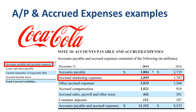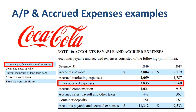The next line item is accrued marketing expenses. Sounds logical for a company that is very brand-driven to have a balance there. Accrued marketing expenses represent the balance sheet liability for marketing costs that have been incurred, but for which an invoice has not or not yet been received. Next is other accrued expenses — other in the sense of not listed individually as a separate line item. No further information is given in the annual report on what's in this balance.